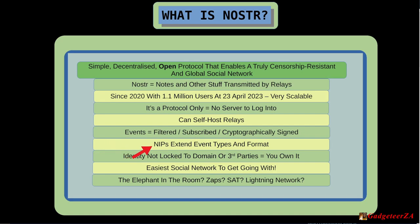The protocol is extended through what they call NIPs — NOSTR Implementation Possibilities. Each is a numbered NIP (NIP-01, NIP-02, NIP-03, etc.) defining how the standard has been extended for new functionality. People propose a NIP, it gets accepted, and then it gets adopted by the various clients or relays if they choose to. You can check whether a specific client supports a given NIP, like NIP-05, if you're interested in that functionality.